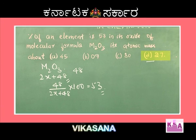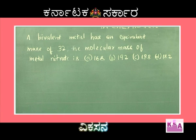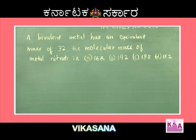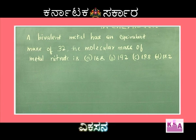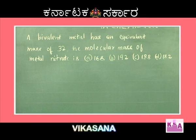Next question: a bivalent metal has an equivalent mass of 32. The molecular mass of the metal nitrate is — option A: 168, option B: 192, option C: 188, and option D: 182.